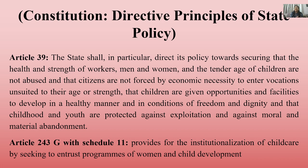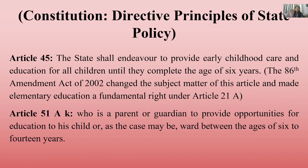Everything — freedom, dignity, development, facilities, safety and protection — is written in Article 39. The state has been directed to work accordingly. Article 43 and Schedule 11 say that institutionalization of child care is needed. Article 45, before the 86th Amendment, stated that the state shall endeavor to provide early childhood care and education for all children until they complete the age of 6 years. This was a directive principle, not a fundamental right.